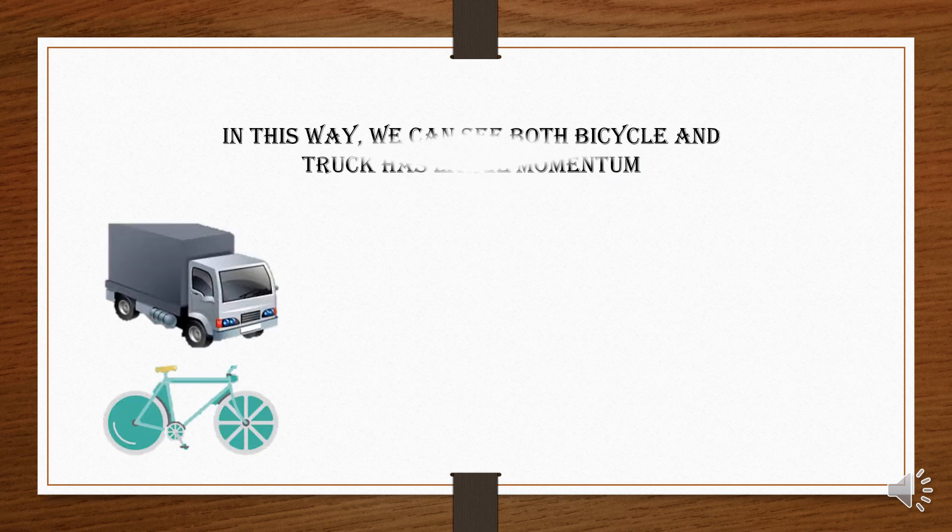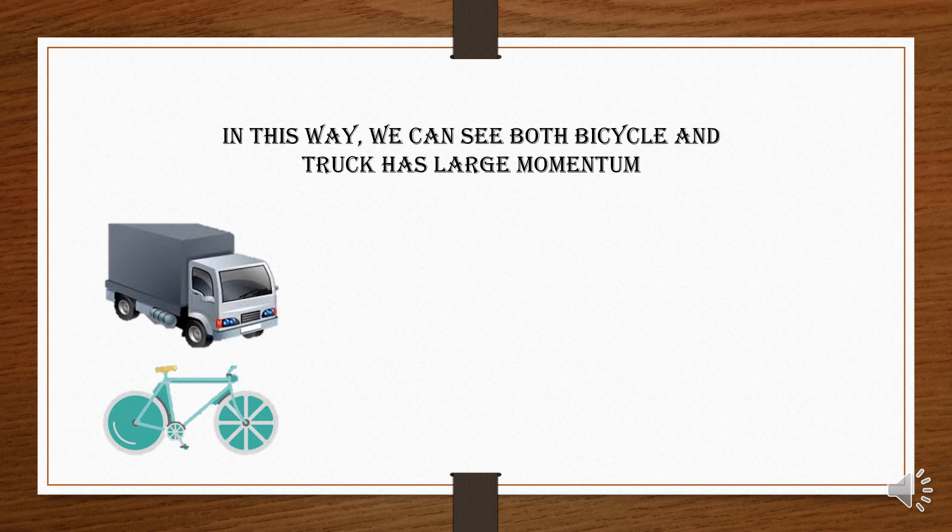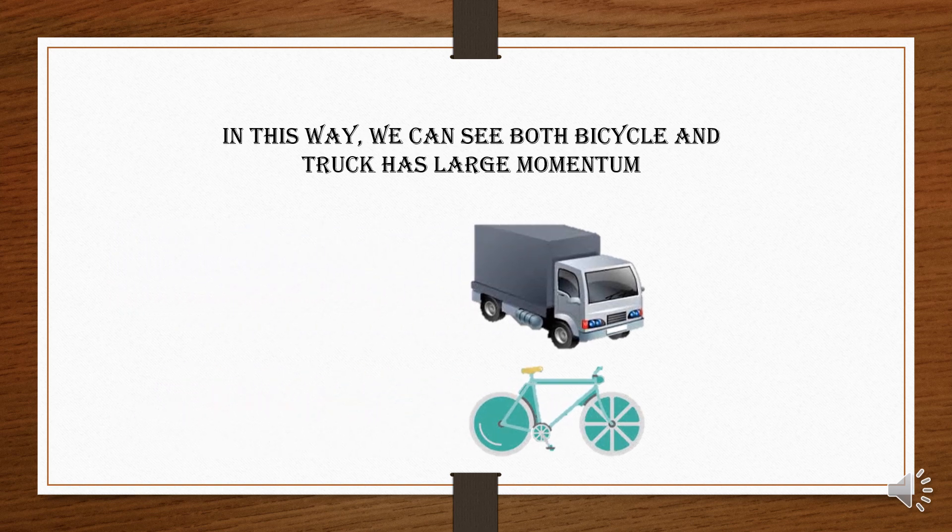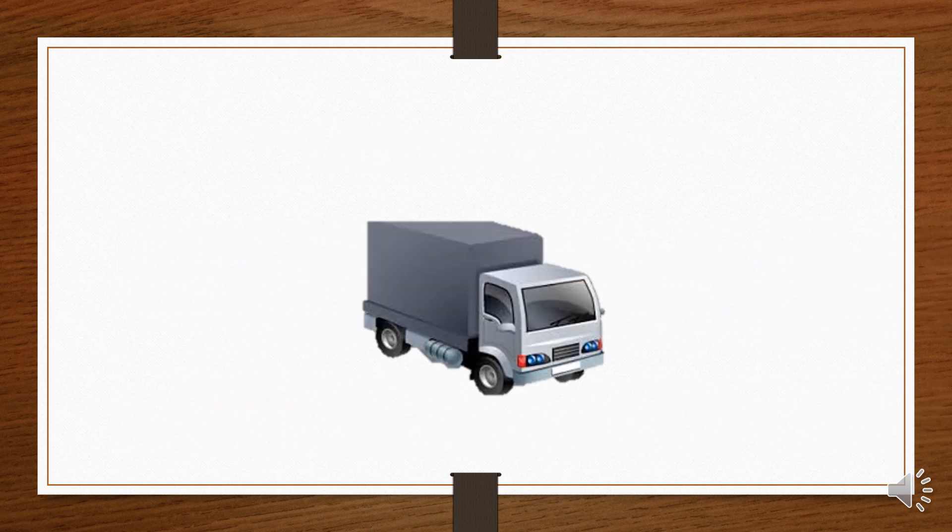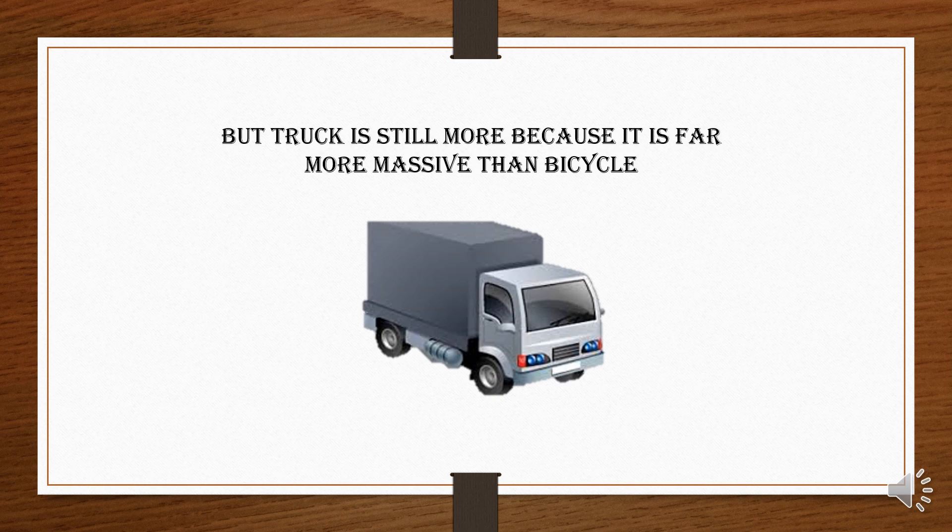In this way, we can see that both bicycle and truck have large momentum, but the truck's is still more because it is far more massive than the bicycle.